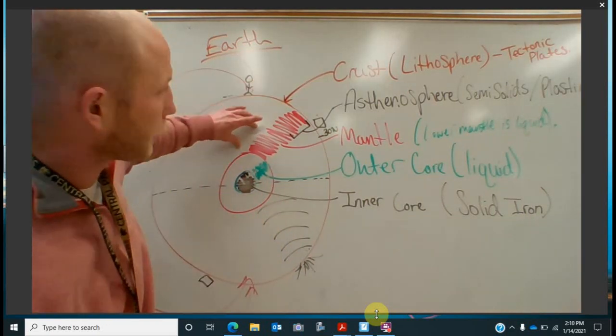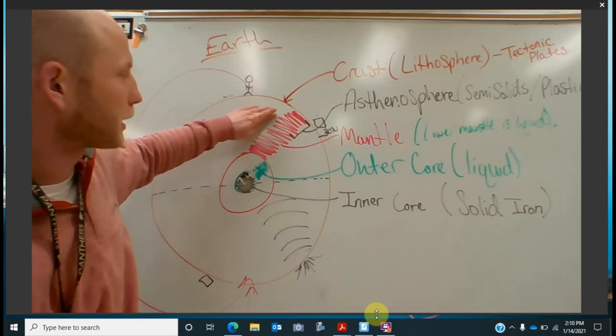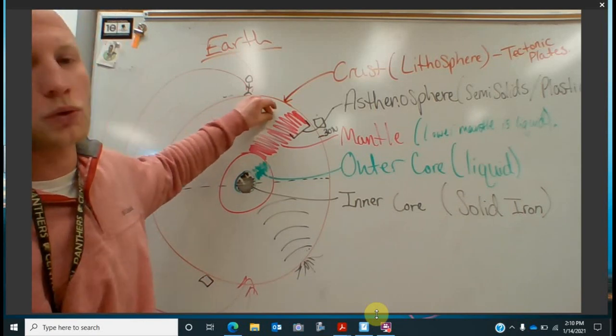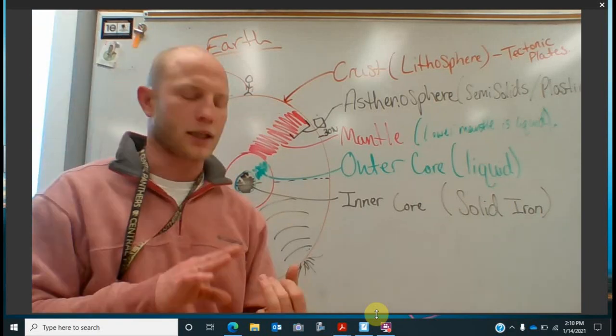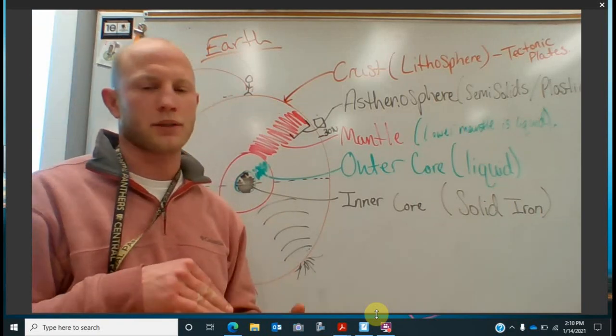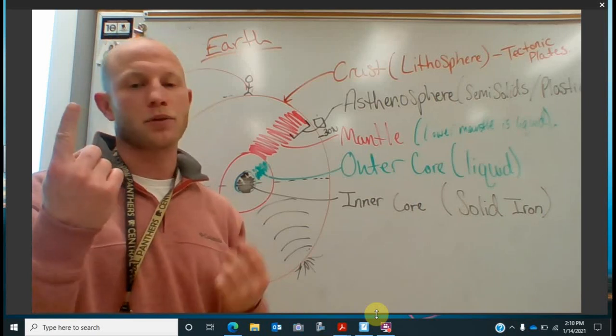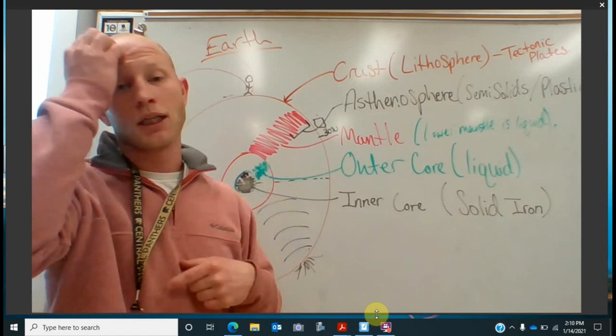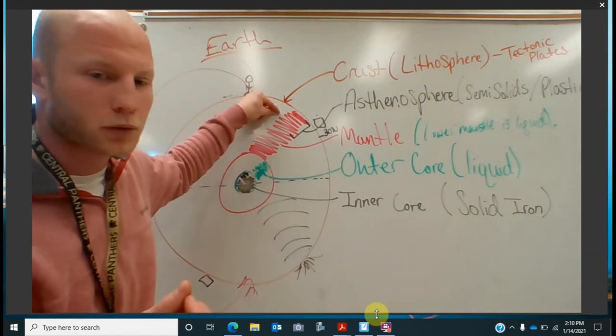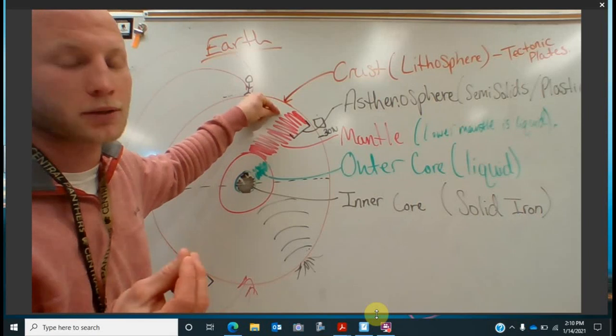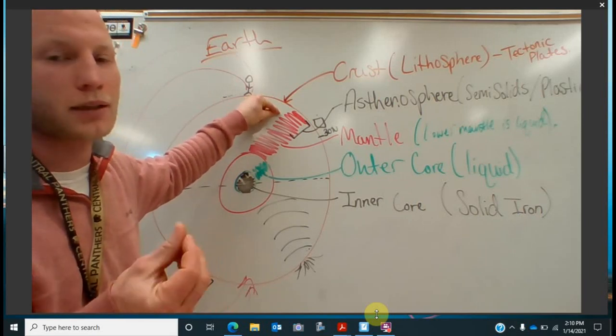So why is it called a plastic layer or a semi-solid? Because this is the part, so our mantle down here is a liquid. It's really hot, it's magma. And then as we get higher and higher, it gets cooler and cooler. So as it begins to cool down, it begins to solidify. However, we know that rocks from last chapter are made of a bunch of different elements, a bunch of different minerals and other things.